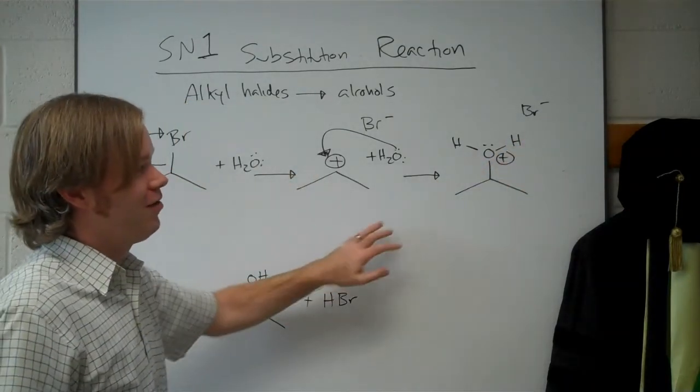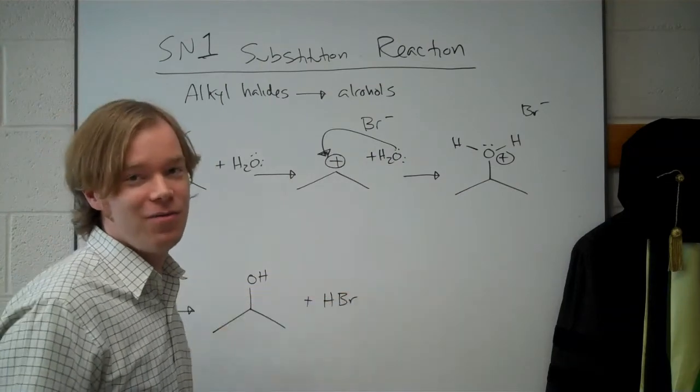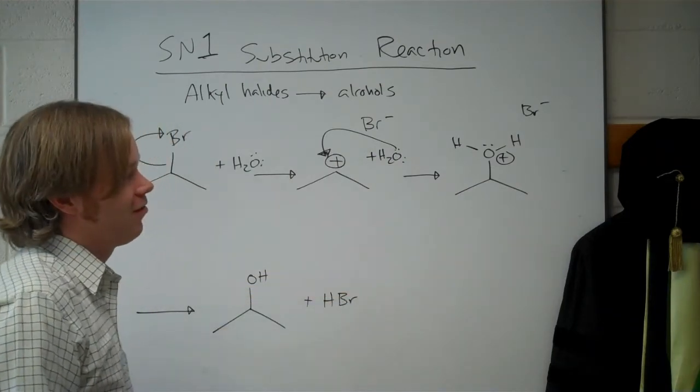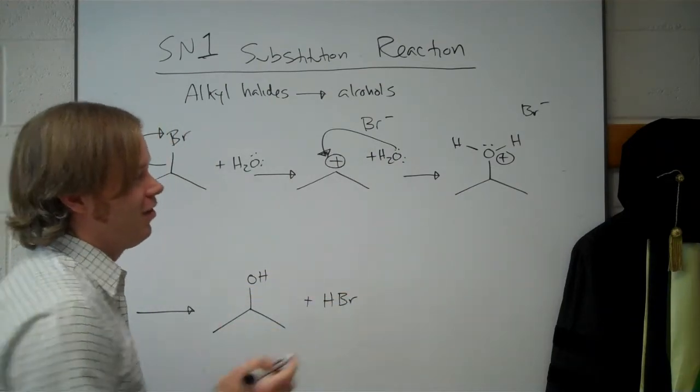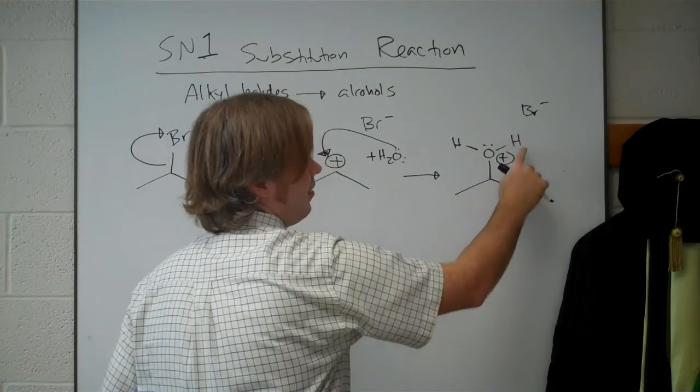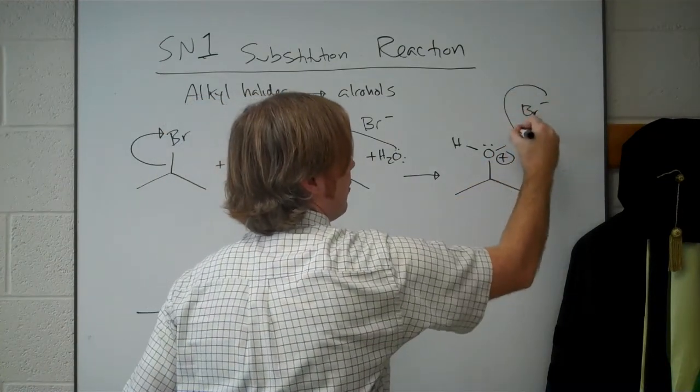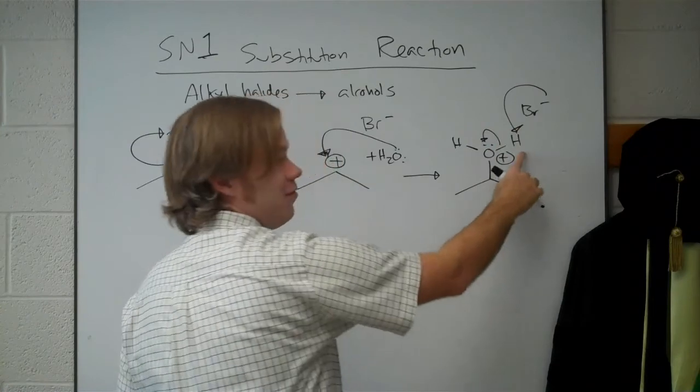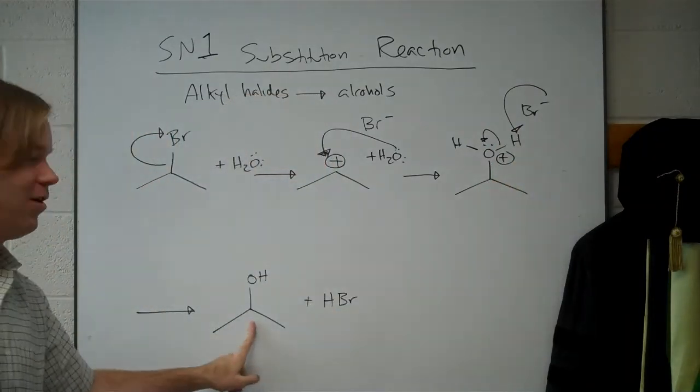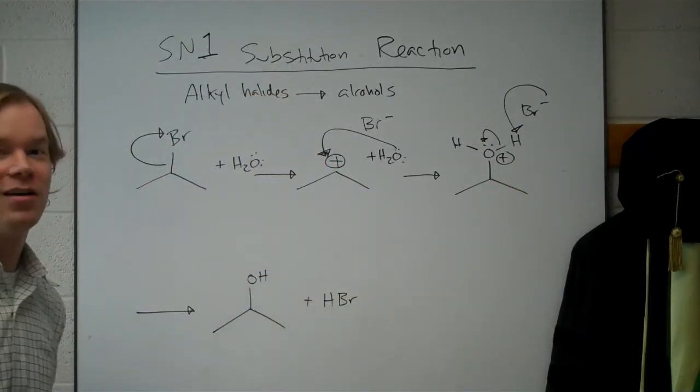At this point, there's a couple of ways you can draw it. An easy way, which might not be perfectly correct in terms of what's actually happening, is bromide acting as a base. That removes the extra hydrogen and gives you your alcohol and HBr as a product.